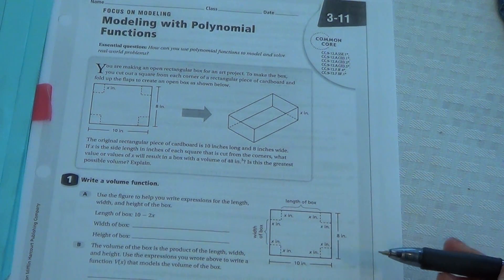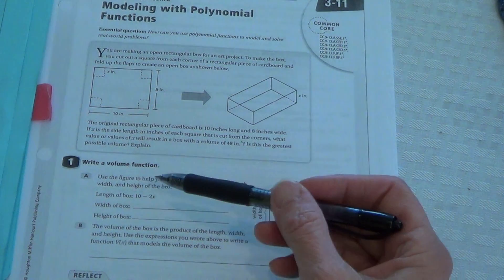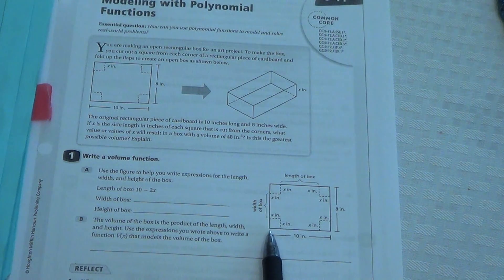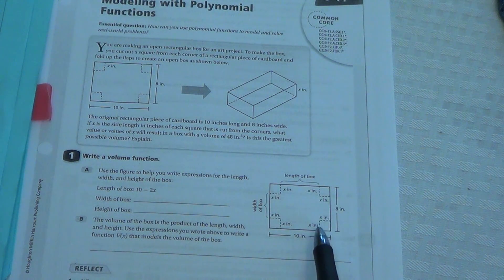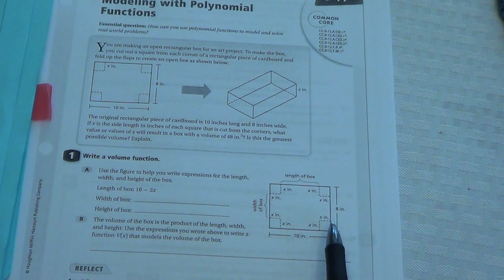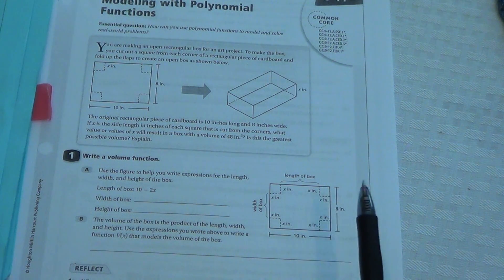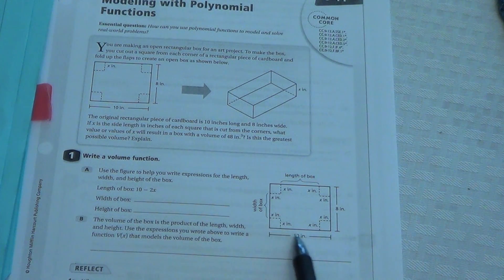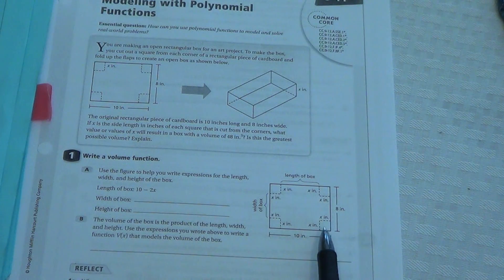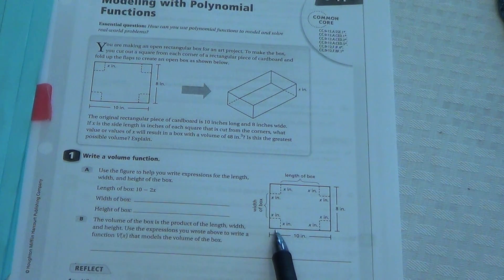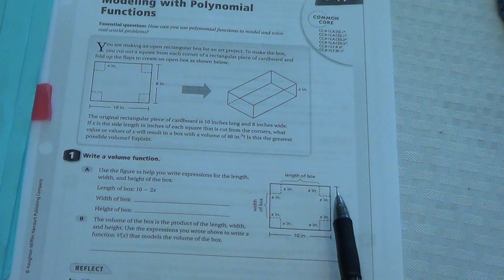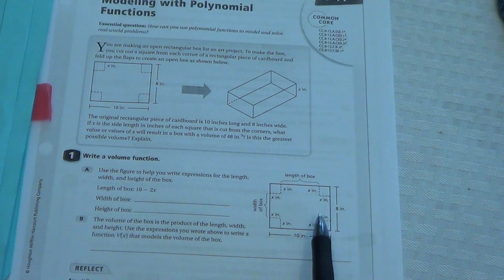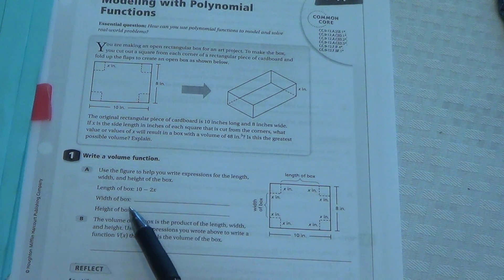So use the figure to help you write the expressions for the length, width, and height of the box. You notice they put the length as 10 minus 2x. Well, you see how they've taken a piece of cardboard, and they're cutting the corners out of it to make a box, to fold it up and make a box. Now in class, we're actually going to do that, so please come to class because you'll see this much better then. But what they've done is they've said the length must be 10 inches minus however much we cut out for the height. That's how we get the 10 minus 2x. So the width would be 8 minus 2x, because it's 8 inches minus the 2x. And then the height of the box would be x.